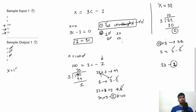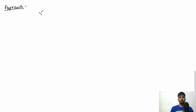For the fourth test case, X = 18. Dividing 18 by 3 gives exactly 6 with no remainder. Chef solved 6 problems correctly and there are no incorrect problems. So the output is 0.